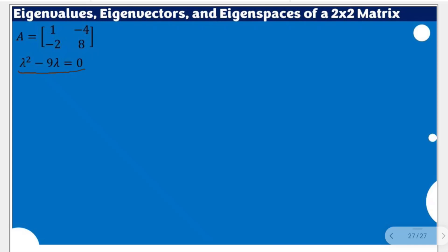If you have time, you may review that video to see how this characteristic equation came into being. We will use it now to solve for the eigenvalues. Since eigenvalues are represented by lambda, we use factoring: lambda times (lambda minus 9) equals 0. By the zero product property, the first lambda is 0 and the second lambda is positive 9. These are the two eigenvalues of this matrix.